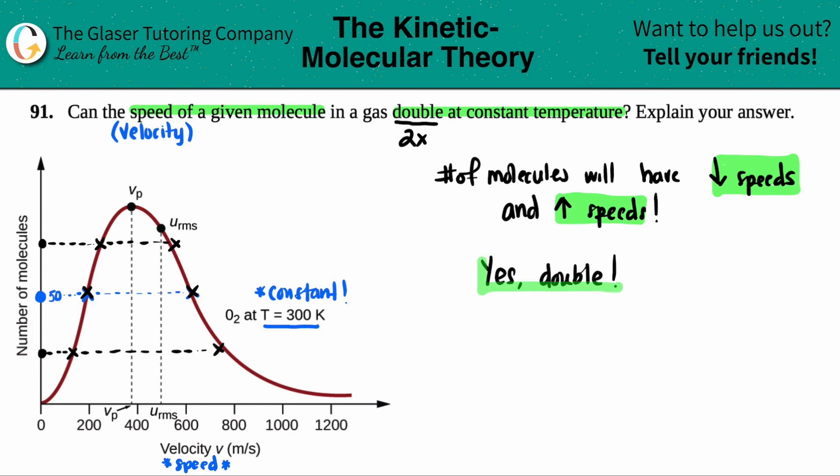The idea here though, is that the average speed, so when you sum up all of these speed differences, the average will be the same, but individual speeds, individual velocities will be able to double.